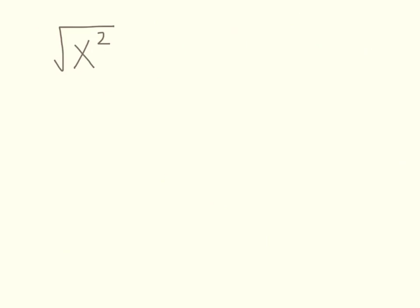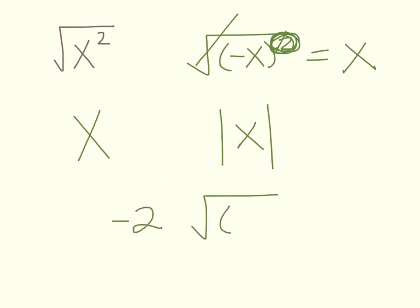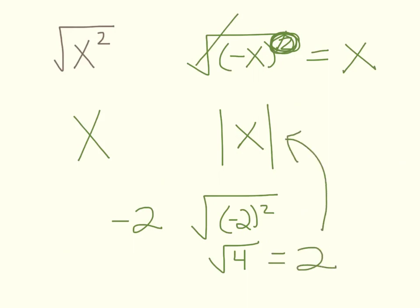Here we have the square root of x squared. You might say it's just x, but consider the square root of negative x squared — that would also give x, because squaring makes it positive. So the square root of x squared must be the absolute value of x. For example, if x is negative 2, the square root of negative 2 squared is the square root of 4, which is 2 — the absolute value of negative 2.